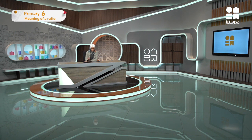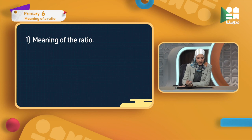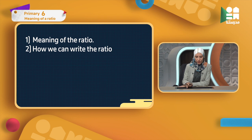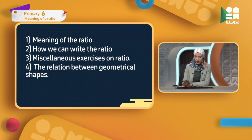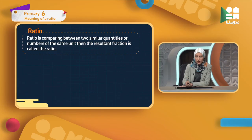First, we have to know the meaning of ratio. So what is the meaning of ratio? How can we write the ratio? Some exercises on ratio and the relation between geometric shapes — this is the second part of the geometric section. Ratio: what is the meaning of ratio? Ratio is comparing between two similar quantities or numbers of the same unit.